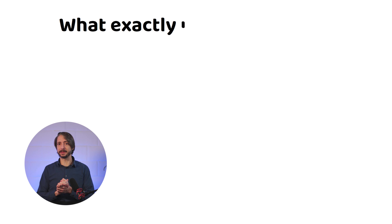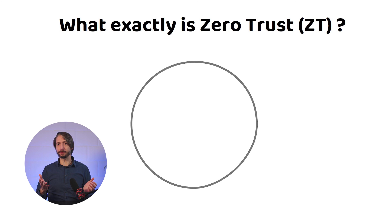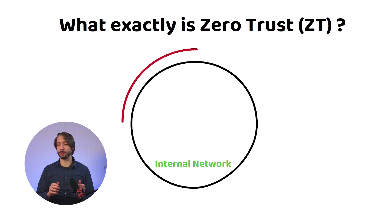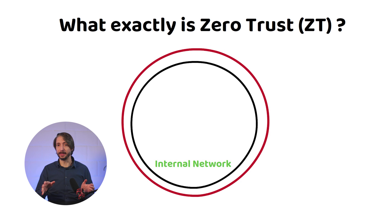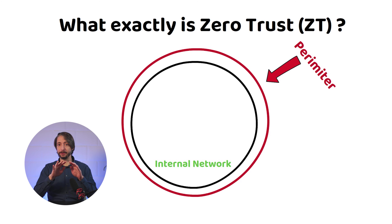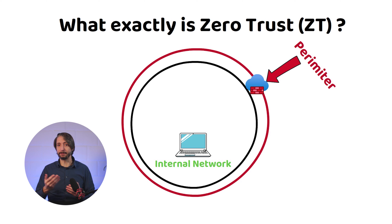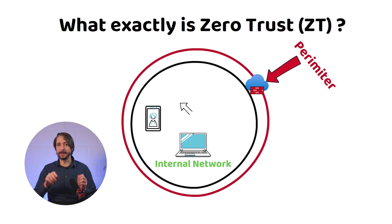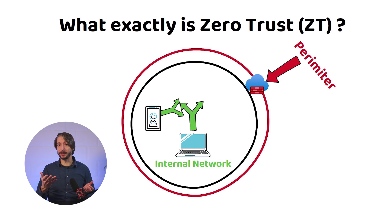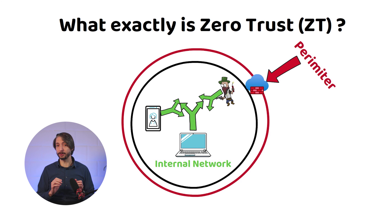So what exactly is Zero Trust? Conventional network security has always been focused on perimeter defenses. In other words, a lot of investments have been made to keep the internal network shielded from the outside. If a device, end-user, or application was inside the shield, it usually meant that they had broad access to the internal network resources — and that's where many malicious actors could gain access to internal systems.